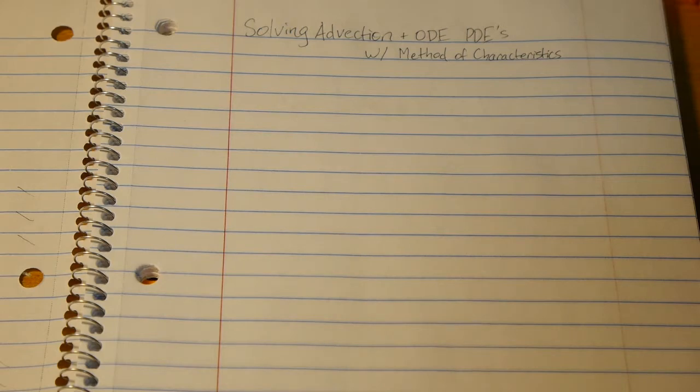Basically what we're going to be doing is finding the curves along which a first-order partial differential equation becomes an ordinary differential equation. And these curves are called characteristic curves.